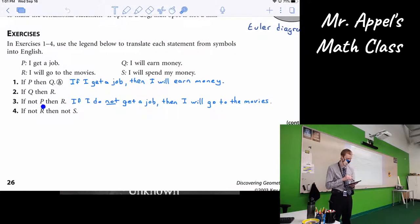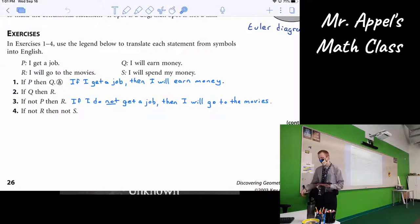Number three said if not P then R. So if I do not get a job, or if I don't get a job, you can use contractions there, or it is not the case that if I get a job, then I will go to the movies. I guess because you have more free time on your hands. Why that is true or not true is of no consequence right now. We're just translating.